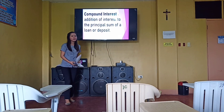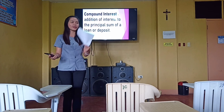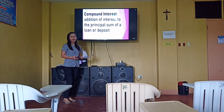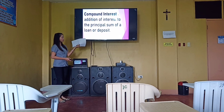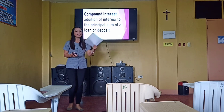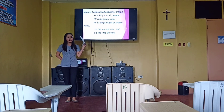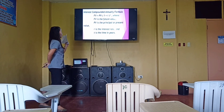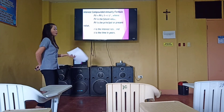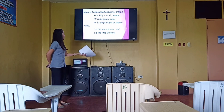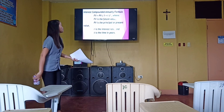Next topic is compound interest. What is compound interest? Read that definition. It means interest on interest. We have a formula for finding the compound interest: FV equals PV times 1 plus R raised to the power of T, where FV is the future value, PV is the principal or present value, R is the rate, and T is the time.